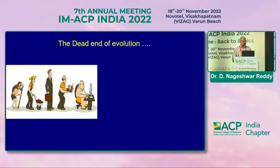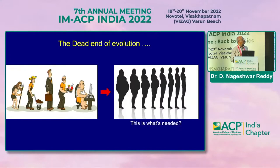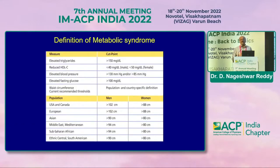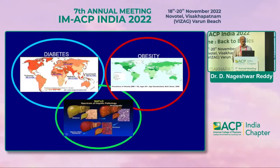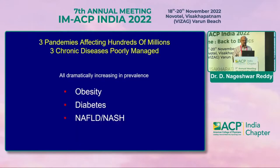We seem to have come to the end of our evolution with the resultant metabolic disease, but we have to de-evolve now to get rid of these problems. The three most important concepts of metabolic syndrome — diabetes, obesity, and NAFLD — are the three things that bother us as clinicians. These are the three pandemics affecting hundreds of millions of people, three chronic diseases poorly managed, all with dramatically increasing prevalence. So any physician needs to have a strong grip on this disease.